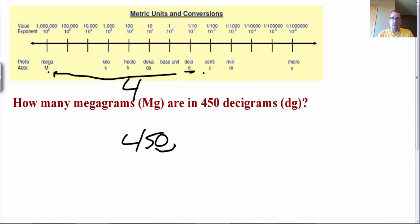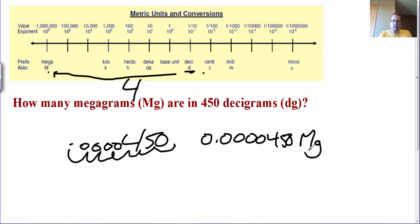So, 1, 2, 3, 4, 5, 6, 7, place my decimal movement there, fill in my placeholder zeros, and what I see is, what I started with was 450 decigrams, but what I have now is 0.0000450 megagrams. Went to the left, got smaller.